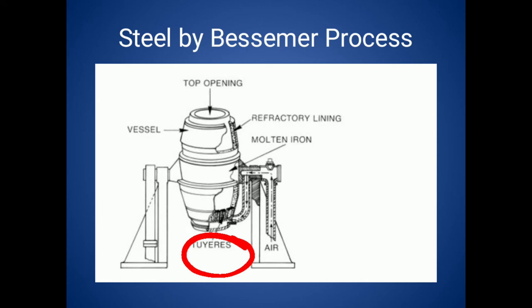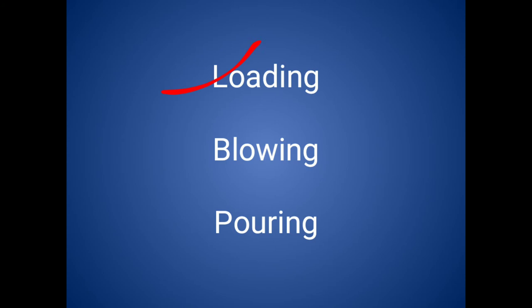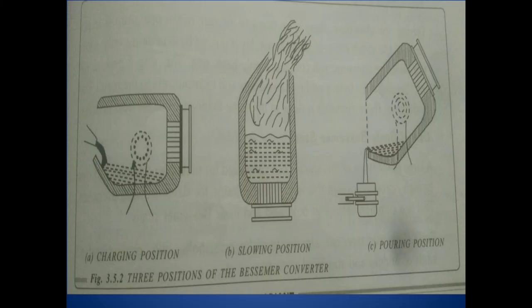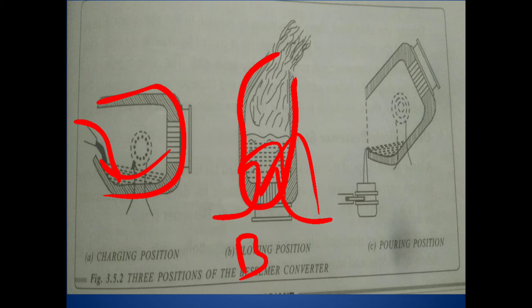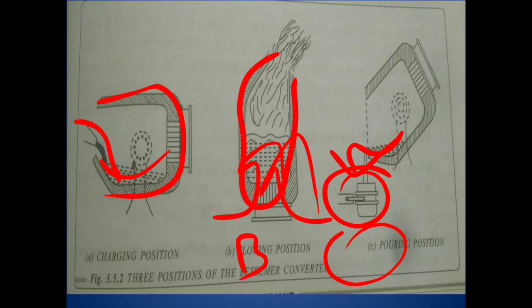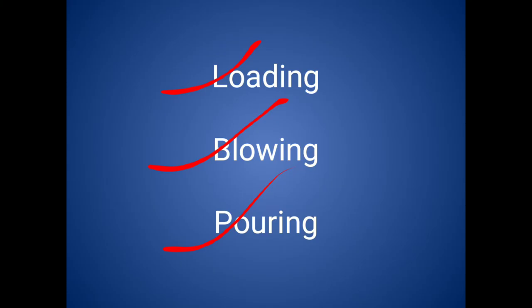Trunnions enable the converter to rotate in three positions: loading position, blowing position, and pouring position. In the loading position, the converter is rotated to the horizontal position to receive the charge in molten state. In the blowing operation, we upright the converter to supply hot air from the bottom through tuyeres — hot nozzles. In the pouring section, when we obtain pure steel, the converter is rotated to pour the molten steel into a ladle.